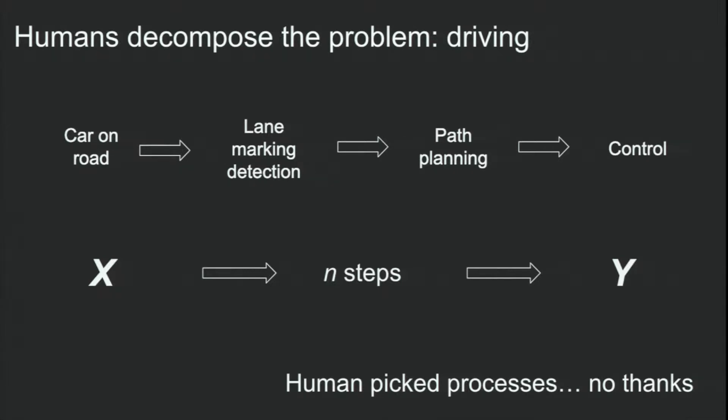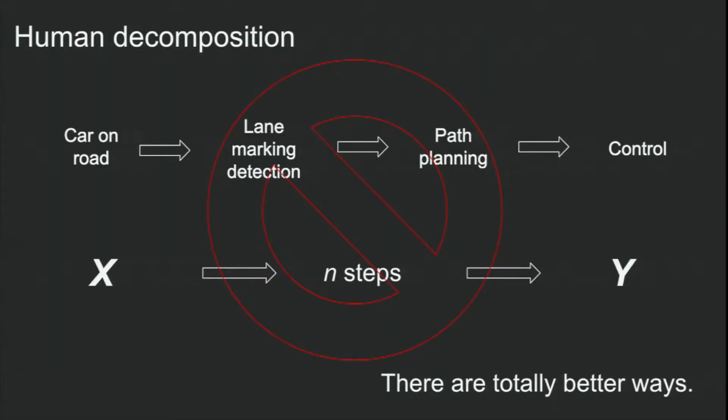We call this decomposing the problem. It's when you start with, so for self-driving cars, when you decompose the problem we'll start with having a car on the road and we'll decompose it to the first step, which is teaching the car how to detect lane lines. After that we go into path planning and then after that control. But as I showed you previously, you can use end-to-end learning and go from one directly to the other.